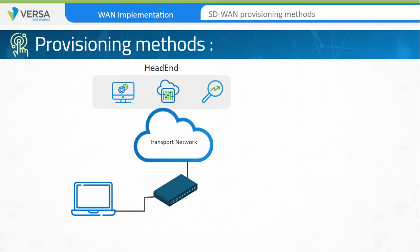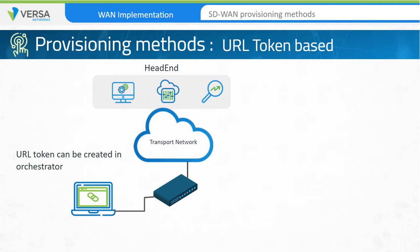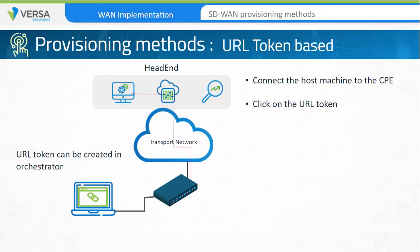With URL token-based ZTP, the engineer at the site uses a URL token instead of manually running a script. The URL token can be created by the orchestrator and doesn't need any manual inputs. All the engineer has to do is connect their host machine to the CPE device over a wired or wireless LAN and click on the URL token. The token has information about WAN links, IP addresses, and IKE parameters to securely connect with the orchestrator, which can then bootstrap the appliance.